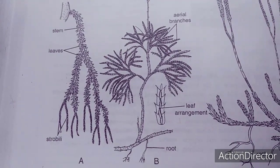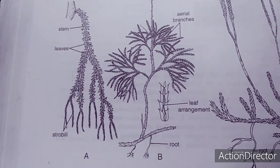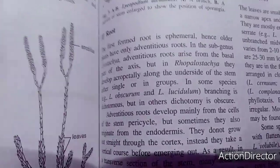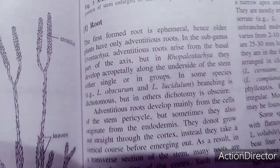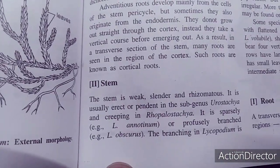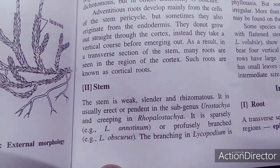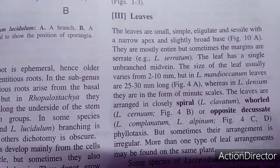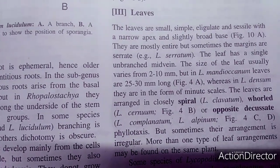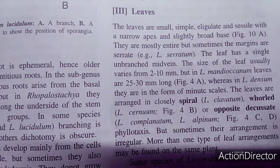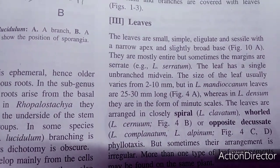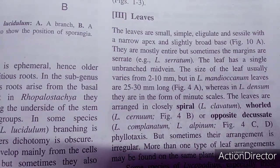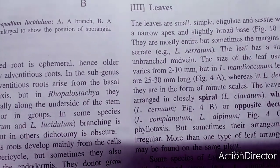All are herbaceous and the stem and branches are densely covered by leaves. There are three clear parts: root, stem, and leaves. The stem is weak, slender, and rhizomatous. The leaves are small, eligulate, and sessile with a narrow apex and slightly broad base. They are mostly entire, and the leaves have a single unbranched midvein.